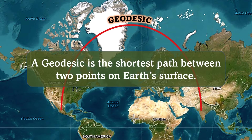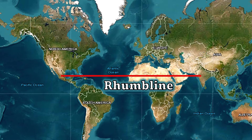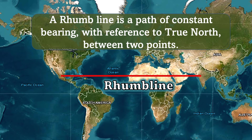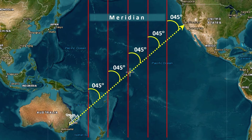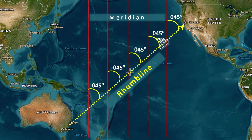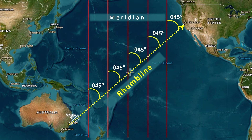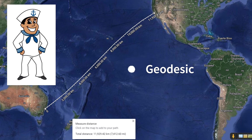This straight line is called a rhumb line. A rhumb line is a path with a constant bearing with reference to true north — you can also call it a constant and continuous azimuth between two points. Suppose you are going from Sydney, Australia to San Francisco by ship: you plot a straight course that cuts all meridians at exactly the same angle. This charted line is the rhumb line. Note it is not the shortest route, but a mariner follows it because he does not have to constantly adjust his course to follow the geodesic line.